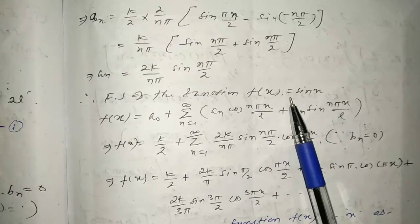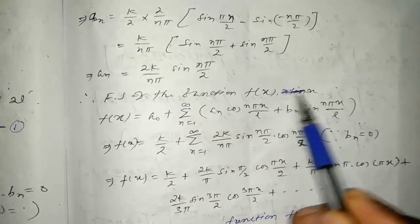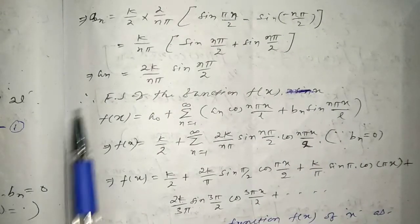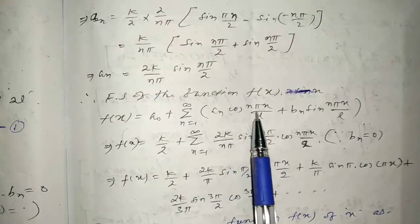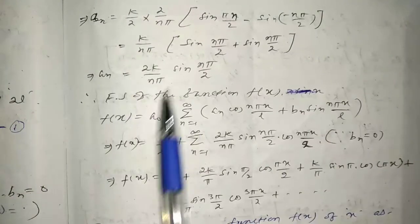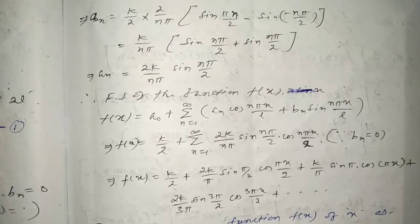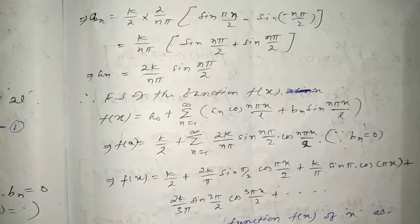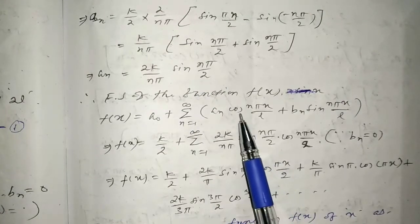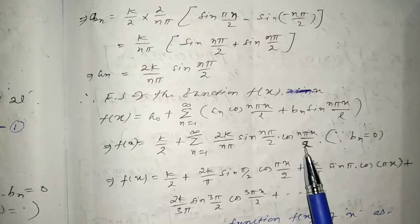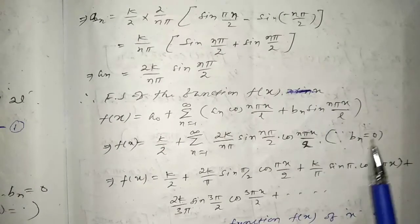Therefore, the Fourier series of f(x) is: f(x) = k/2 + summation from n=1 to infinity of [(2k/nπ)·sin(nπ/2)]·cos(nπx/2), since bn = 0. Now substituting values of a0 = k/2 and an = (2k/nπ)·sin(nπ/2) into the series.